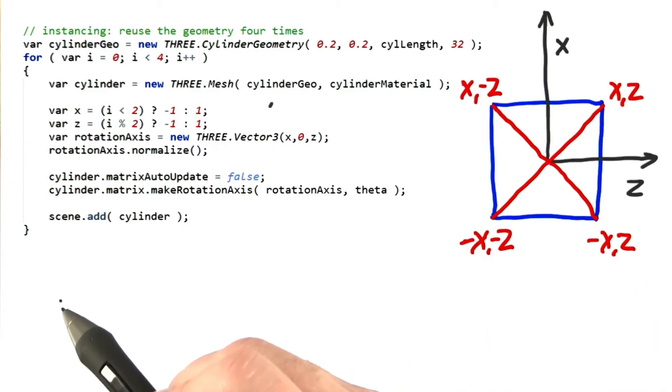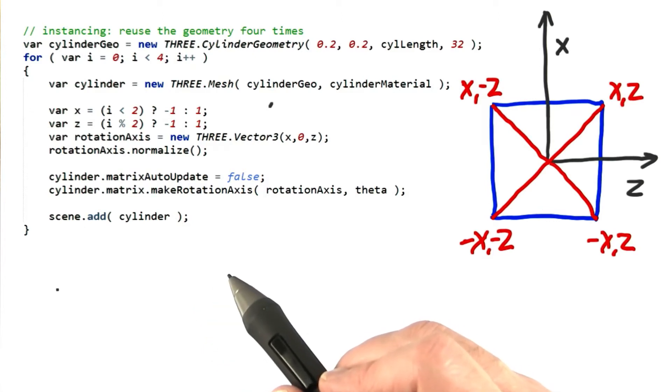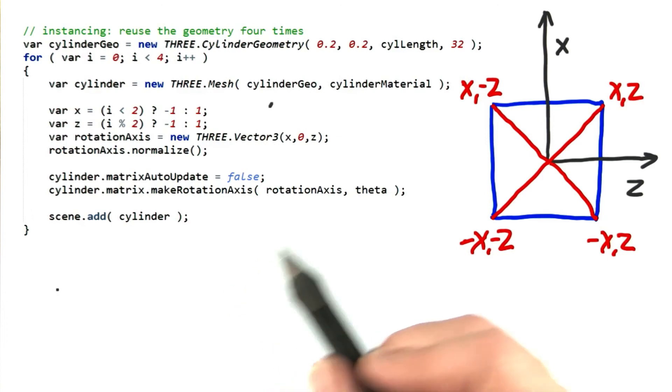I then normalize this axis and use it as usual. You could also solve this one by using just two rotation axes and flipping the sign of the theta, rotating each pair of cylinders in opposite directions.